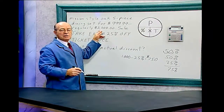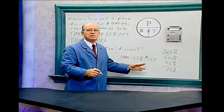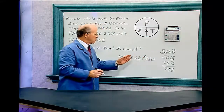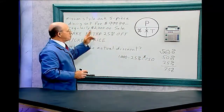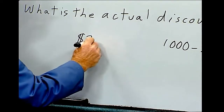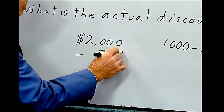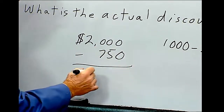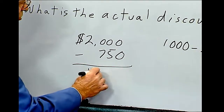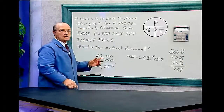So for this $2,000 piece of furniture, you can purchase it for $750. Now let's look at the total discount. The original price is $2,000 minus $750, so the discount is $1,250. That's your discount.